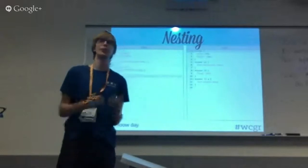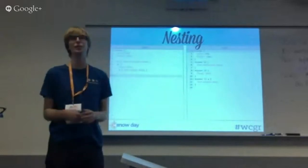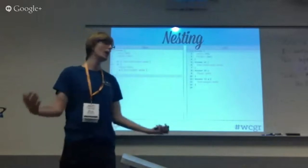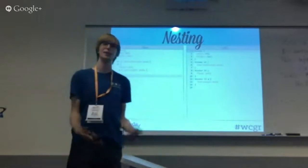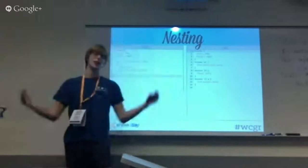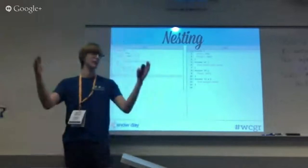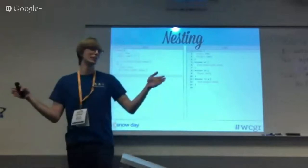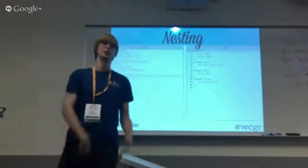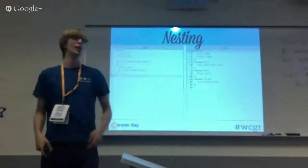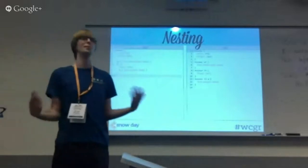One thing you want to watch out for, though, is don't go overboard with nesting. Some people, when they first start using Sass, think 'oh, this is awesome, I can nest everything,' and they end up with seven layers of nesting. And that's stupid because now you have a selector that's really, really specific. You wouldn't use seven selectors — you wouldn't do element, ID, class, descendant of this class with this element. So just keep that in mind.